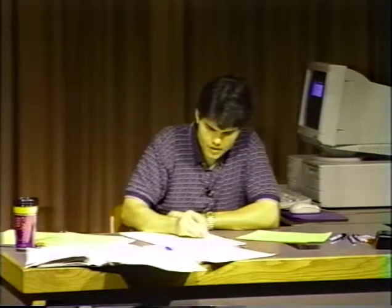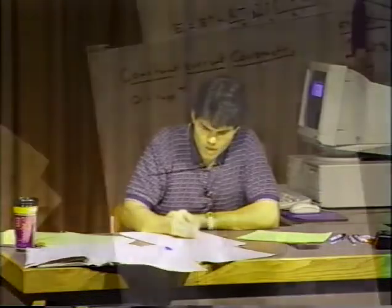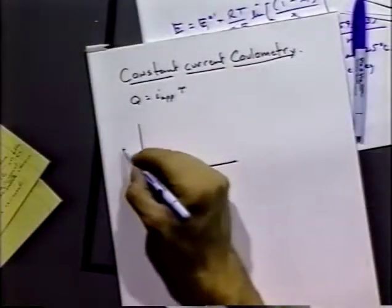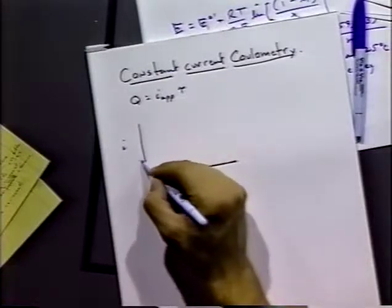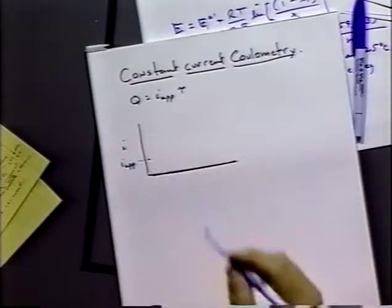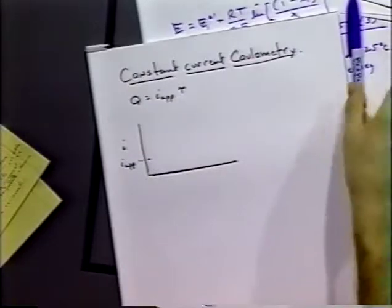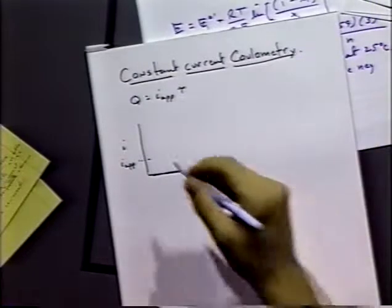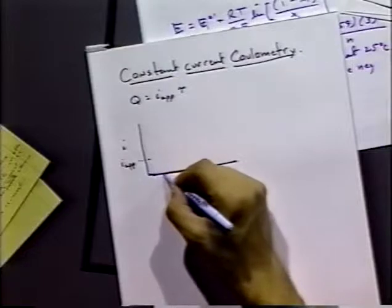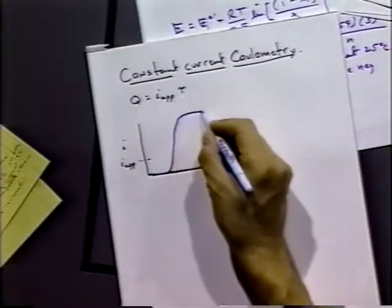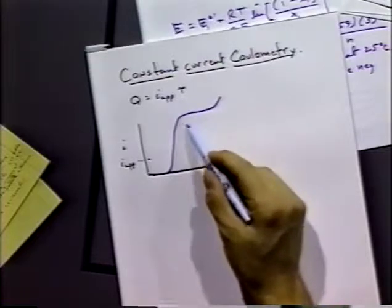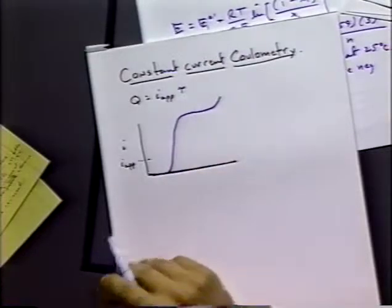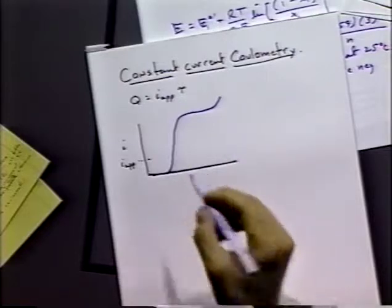Let's consider what happens when we use constant current coulometry to do a detection of a species. Here's the current and let's suppose we're applying a certain amount of current to our system. Our current voltage curve looks like this, where here is our reaction of interest. This species O is being reduced at the particular point.